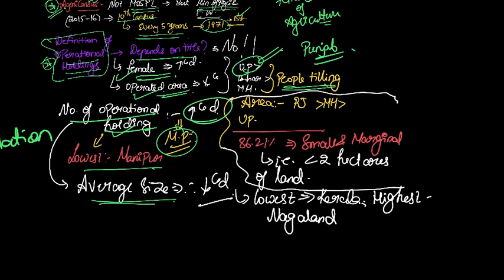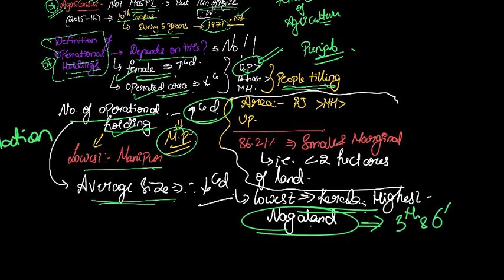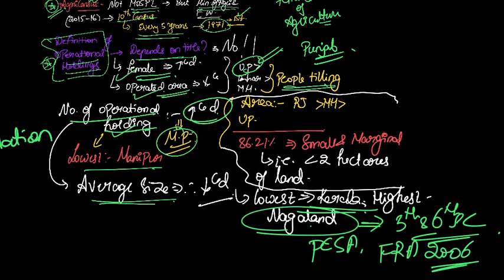And the poorest size you can find in Kerala and the largest size you will find in Nagaland. Now what does this tell you about the implementation of the Fifth and Sixth Schedule? Just think about it.